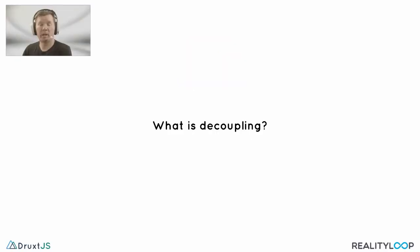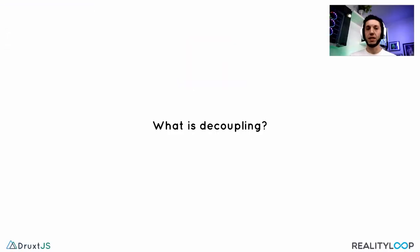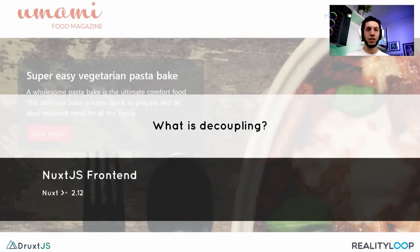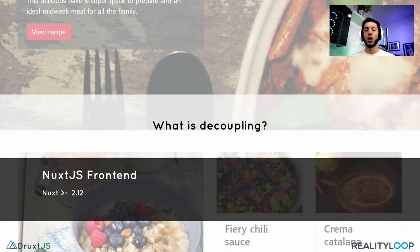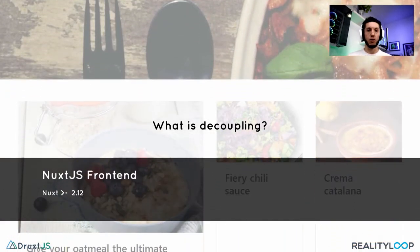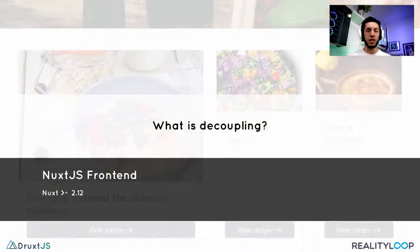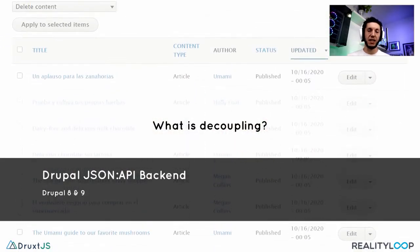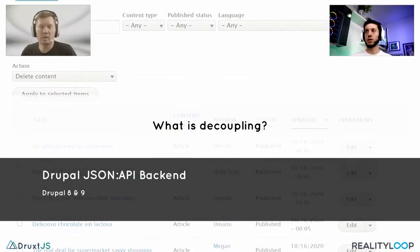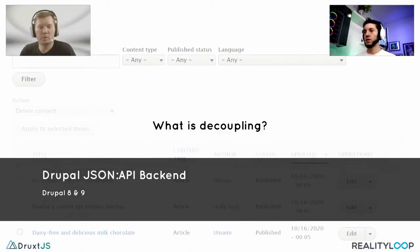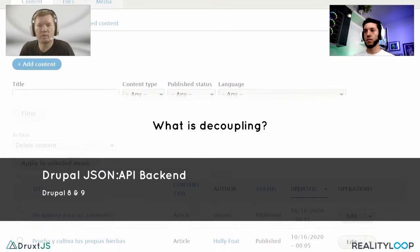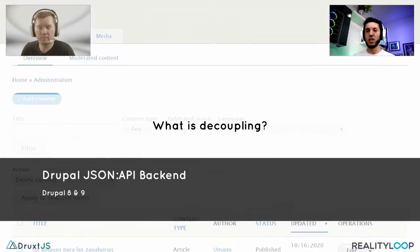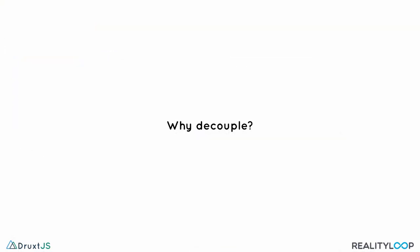But before we get into that, could you quickly cover off what decoupling is? Decoupling is the process of separating your presentation layer or your frontend from your content management system — your backend — in this case Drupal. So using Drupal more as a content repository. And why would I want to do that?